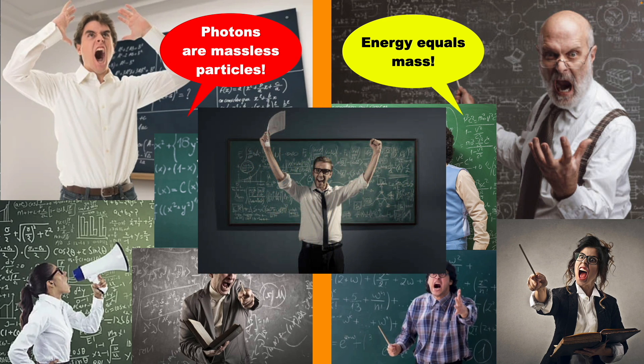Now in my experience, many people in the photons are massless particles camp are not convinced by this resolution. They stand firm that there's only one kind of mass that matters, and that's rest mass. And they have a point. The other kind is just energy divided by c squared. Why don't we just call it energy?